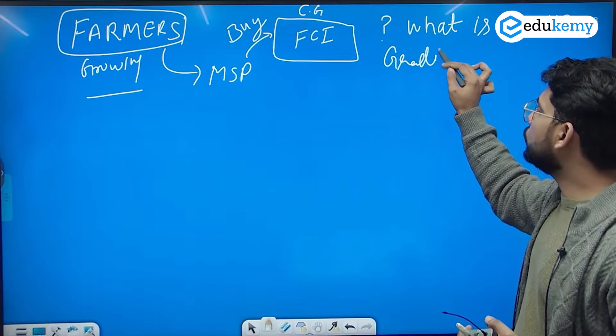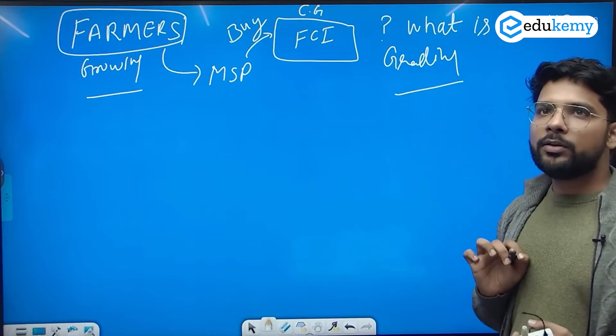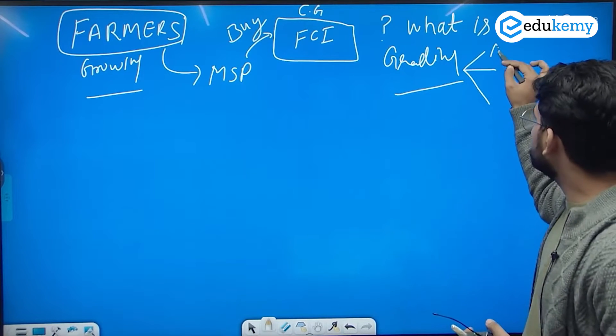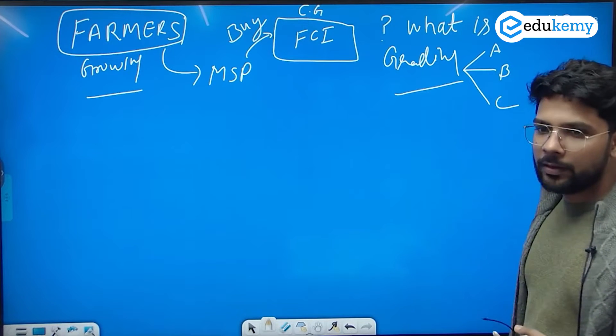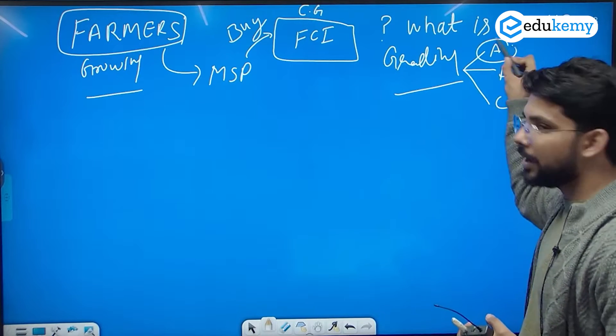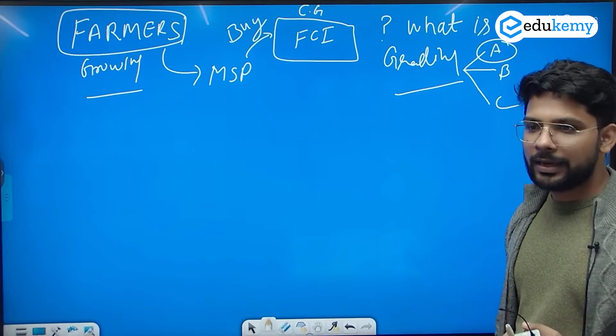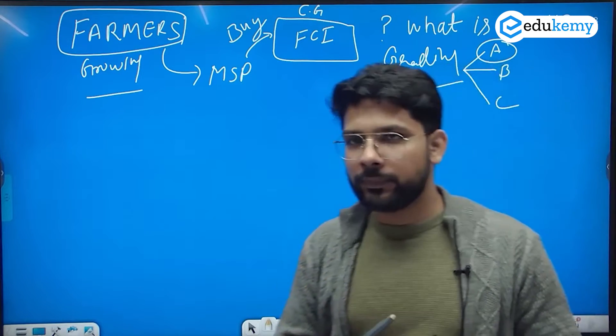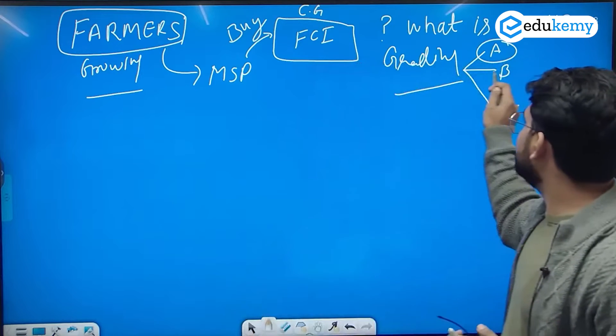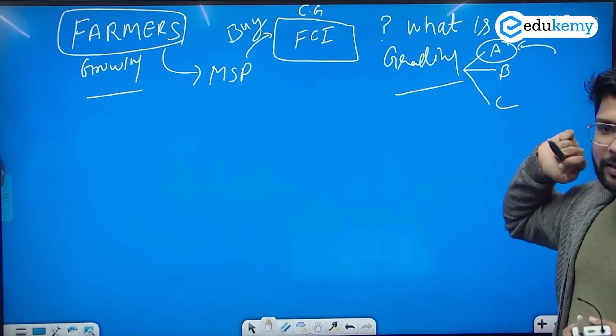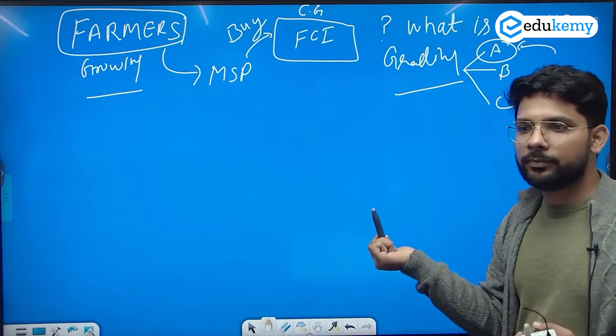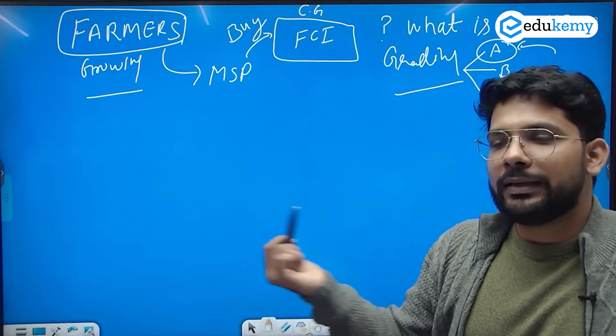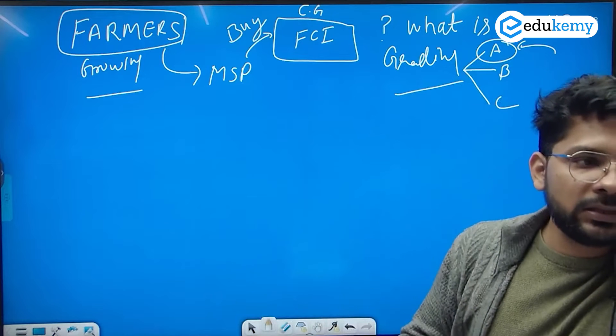Now they categorize the grains into multiple categories - A class, B class, C class. Now they're demanding this class, so the farmers are discouraged. And to grow A class is not easy - high yielding variety seeds, good fertilizers, high irrigation are needed.